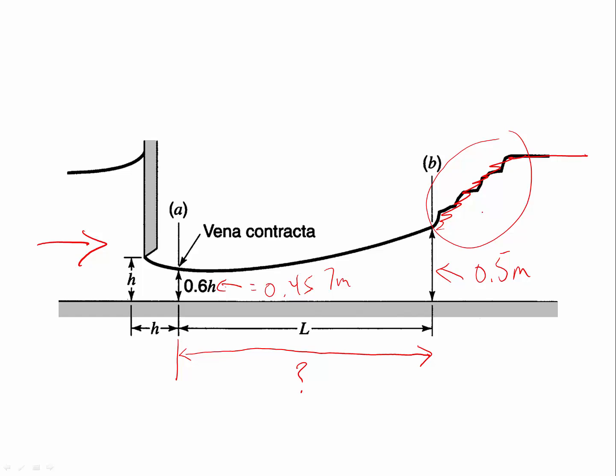You recall that we went through a derivation in Lecture 15 where we said that the gradually varying flow equation looked like this: dy/dx equals the bed slope minus the friction slope over 1 minus the Froude number squared. We could use that equation to go through and solve this, but what we're going to do is use an earlier version of this that was in a more expanded form.